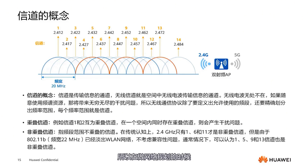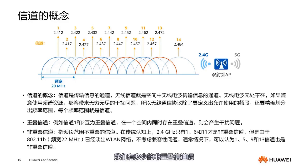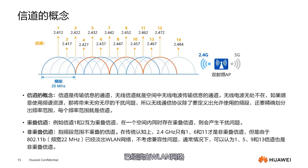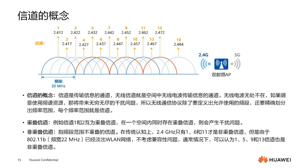When planning networks, we generally consider using different frequency channels in the same space for data transmission — namely, non-overlapping channels. Channels 1, 5, 9, and 13 are non-overlapping. Traditionally in 2.4 GHz, only channels 1, 6, and 11 are considered non-overlapping. However, since 802.11b has phased out of WLAN networks, we now consider deployment of non-overlapping channels in 3D scenarios — not only the same floor but also the floors above and below, ensuring there is no overlap.